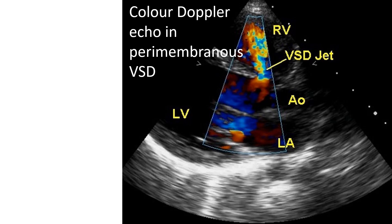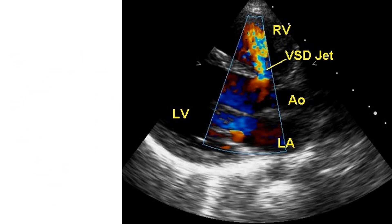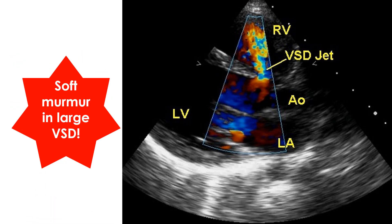VSD can be suspected clinically when there is a pan-systolic murmur in the left parasternal region. In small VSD, it is often a loud murmur due to the large pressure gradient across the defect, and it is usually associated with a thrill. Small VSD is also known as maladie de Roger. The murmur is softer in large VSD because the pressure gradient between the two ventricles is low, as the large defect equalizes the pressures in the two ventricles.